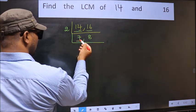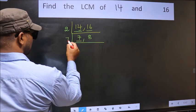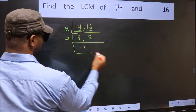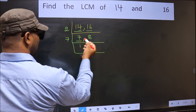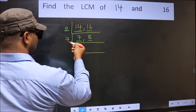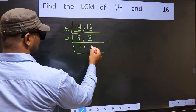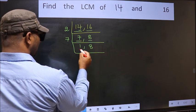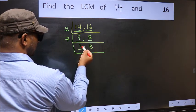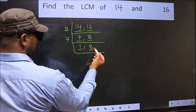Now here we have 7. 7 is a prime number, so 7 ones are 7. Now the other number 8 — not divisible by 7, so we write it down as it is. We got 1 here.